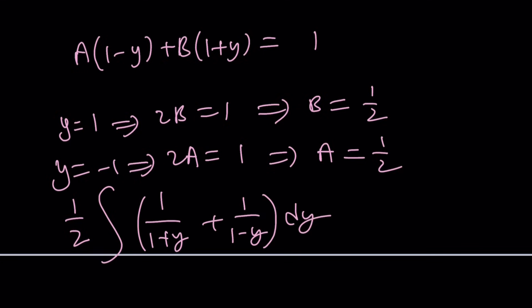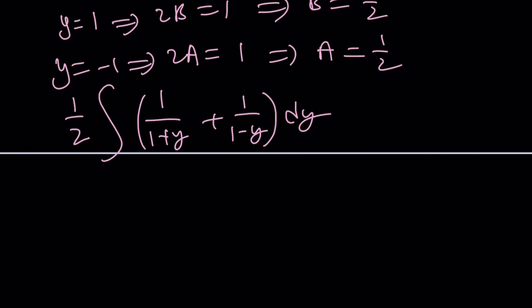And these are very easy to integrate. For example, this one would be ln 1 plus y. This one would be ln 1 minus y. And there's going to be a 1 half on the outside. Now, when you set this equal to x plus c, which is the integral on the right-hand side, then I think things are going to be a little easier.